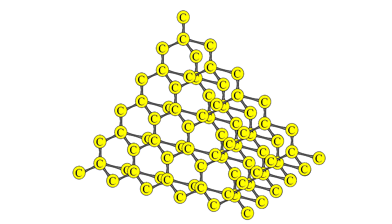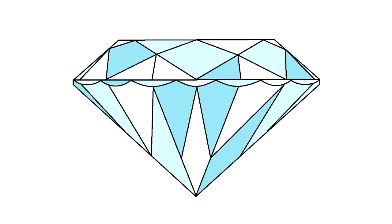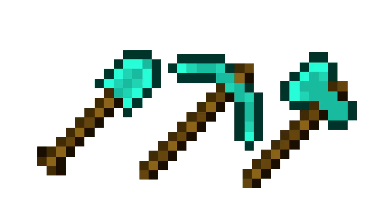Perhaps the most well-known allotrope is diamond, which is the result of carbon atoms singly bonded together in a tetrahedral sp3 hybridized lattice. Diamond is clear by nature and has gained cultural popularity with its jewelry use. Due to its hardness, diamond is also popular for drilling, cutting, and Minecraft.